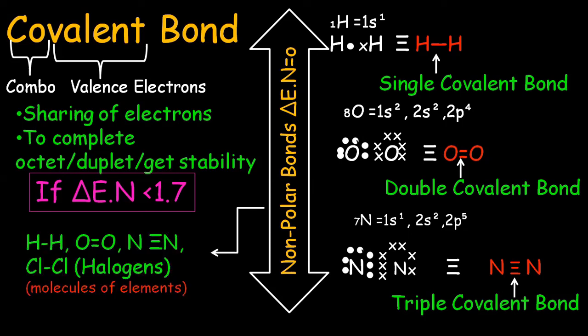For example, H2, O2, N2, Cl2, all the halogens make nonpolar covalent bonds. As these molecules are formed by two same types of atoms, so these are regarded as the molecules of elements.